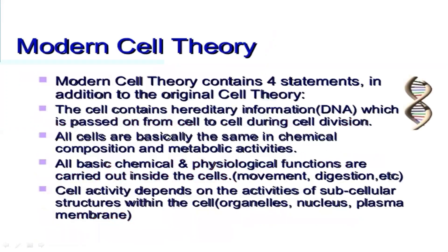The modern cell theory consists of four statements. Statement one: the cell contains hereditary information which is passed on from cell to cell during cell division. Statement two: all cells are basically the same in chemical composition and metabolic activities — the chemical composition and metabolic activities carried out in cells are the same. Statement three: all basic chemical and physiological functions are carried out inside the cells, including metabolic activities and physiological functions like movement and digestion.